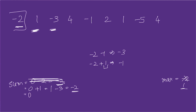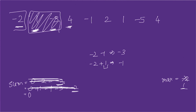Next element four: sum becomes four, max updates to four. Next minus one: sum becomes three, smaller than max, no update. Sum is positive so we continue. Next two: sum becomes five, max updates to five. Next one: sum becomes six, max updates to six. Sum is still positive, keep going.